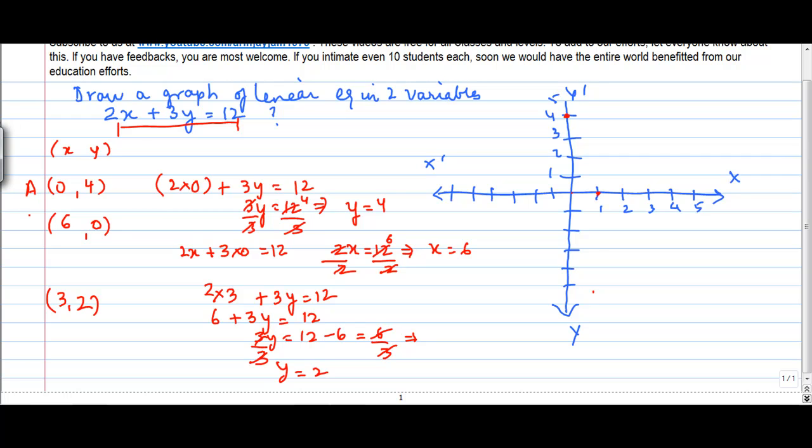Let's call these three points as A, B and C. Now let's start plotting them on the graph. So A is equal to 0, 4. We know x is equal to 0 sits here and y is equal to 4 comes here. So you have point A here which is 0, 4.